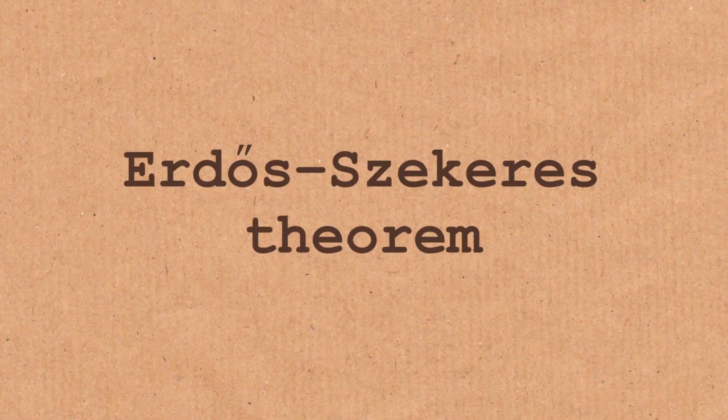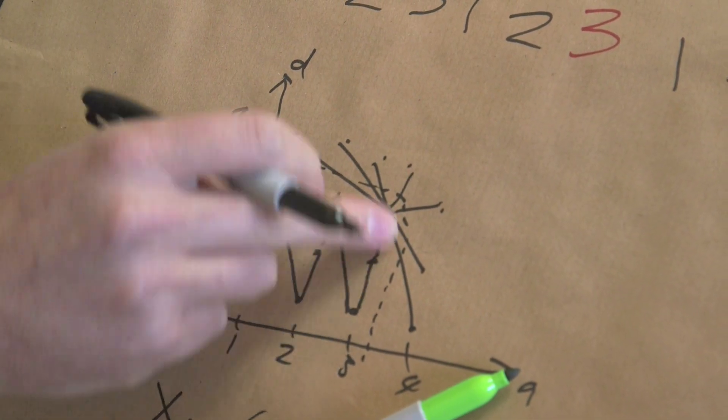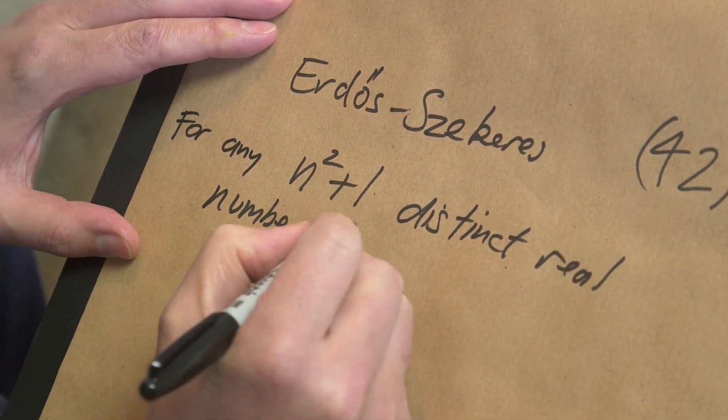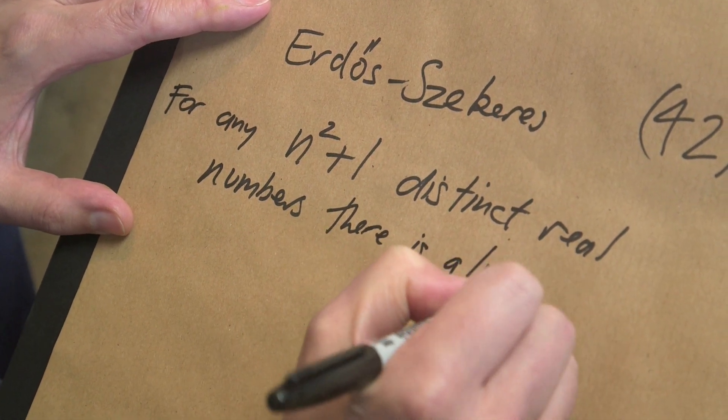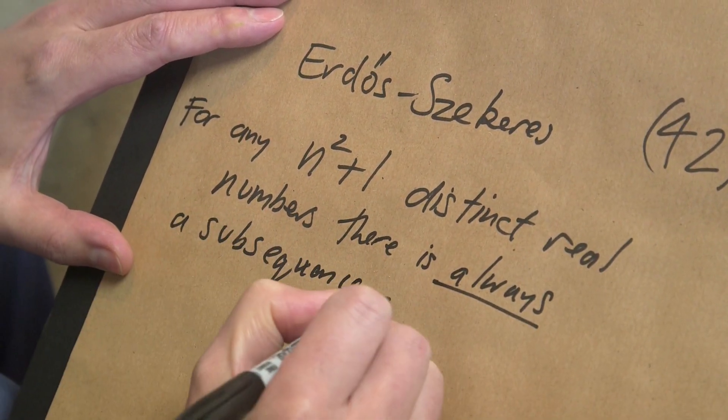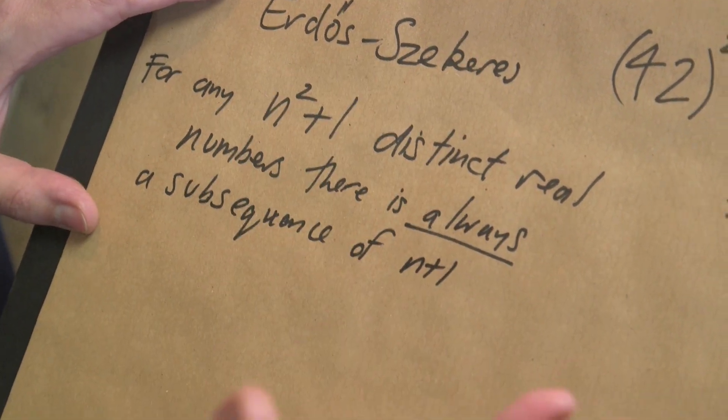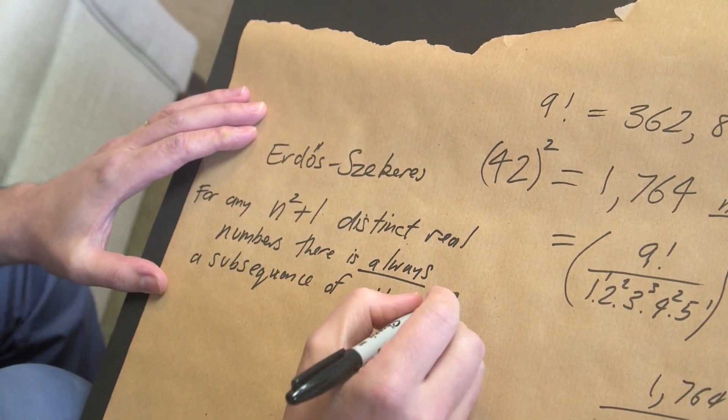So this is called the Erdős-Szekeres theorem. And if you notice, it's a square. So in actual fact, we can generalize up for any n squared plus one distinct real numbers, there is always a subsequence of n plus one. So in this case, three plus one is four, and we're dealing with three squared, subsequence of n plus one.